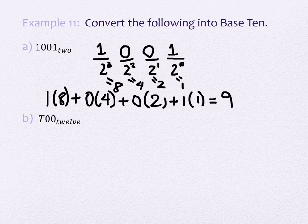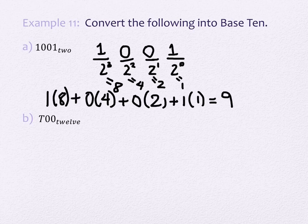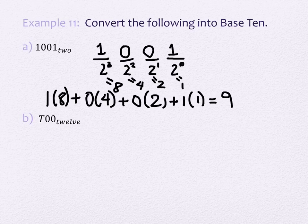I will do the next one next time, but let me make one comment. If the base goes up — like this was base 2 up to base 10 — the number of numerals goes down. So on this next problem, I'm going to take base 12 and turn it into base 10. That's a bigger numeral system. What do you think is going to happen to my digits? The number is going to look smaller when we do it.